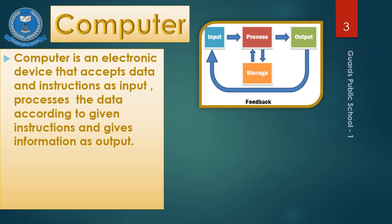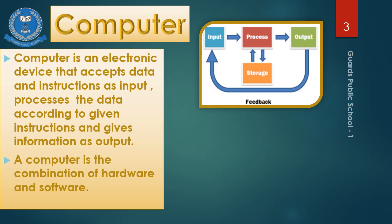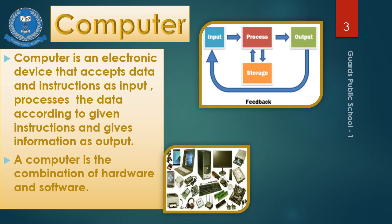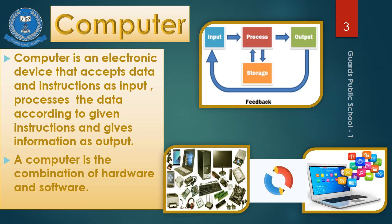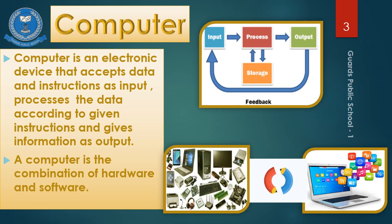The second definition of computer is: a computer is a combination of hardware and software. If you have all the hardware equipment but no software, no application, no operating system, you are not able to work with the computer. And if you have all the applications and operating systems but no hardware component, you are also not able to do any work. So computer is a combination of hardware and software.